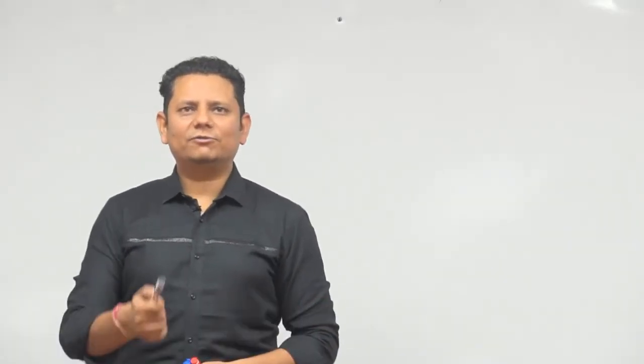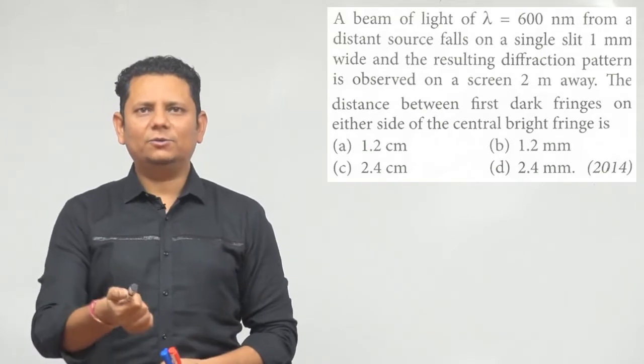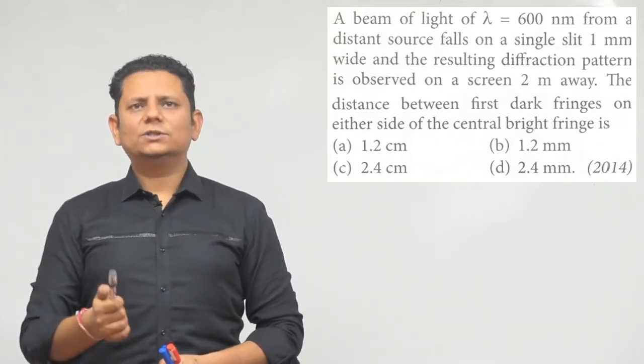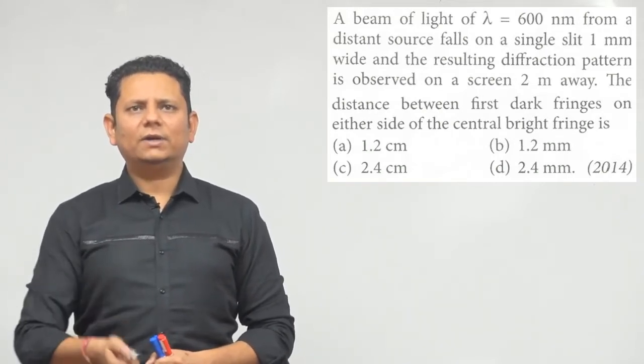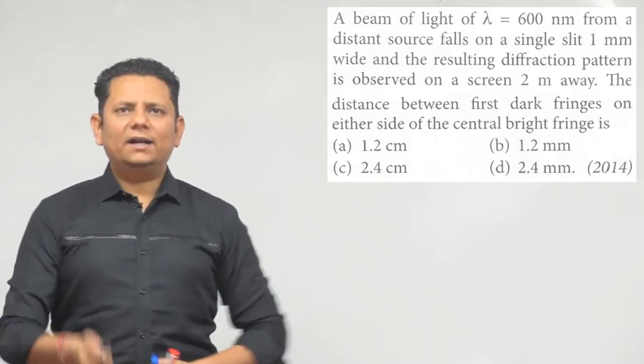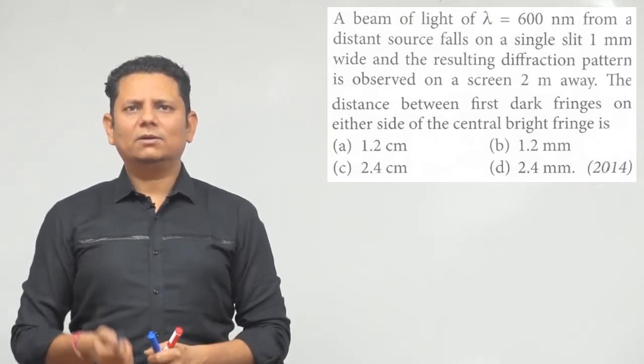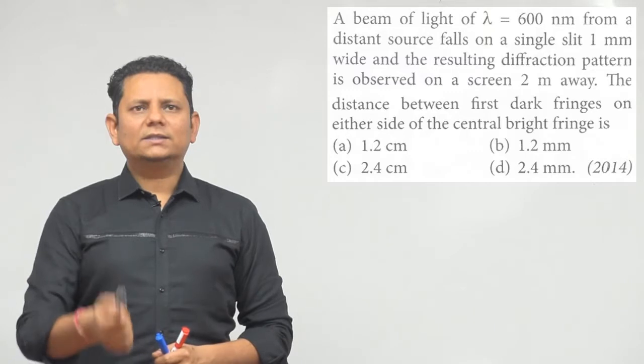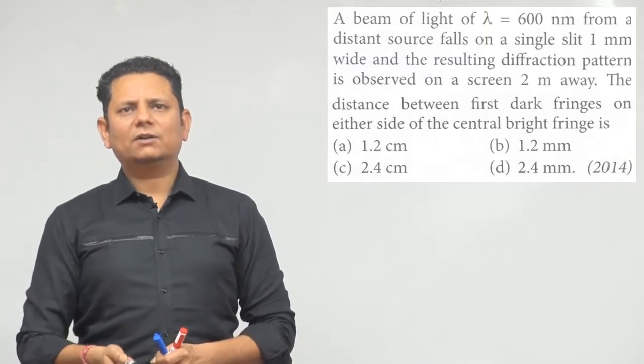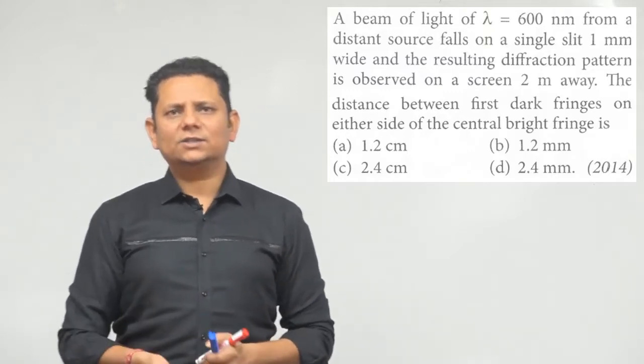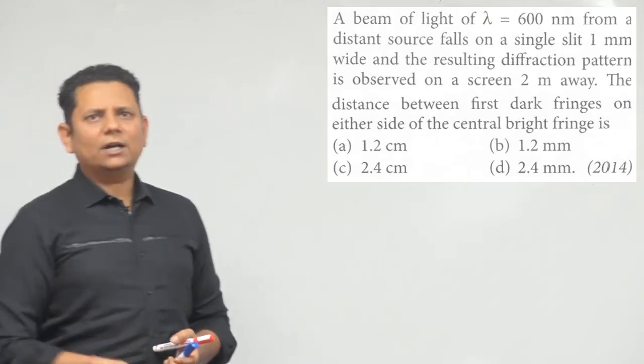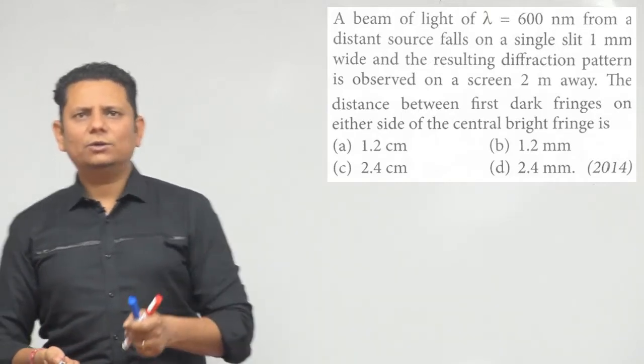Next question, 2014 question, says a beam of light of lambda 600 nanometer from a distant source falls on a single slit 1 mm wide and the resulting diffraction pattern is observed on a screen 2 meter away. The distance between the first dark fringe on either side of the central bright fringe will be - four options: 1.2 centimeter, 1.2 millimeter, 2.4 centimeter, 2.4 millimeter.